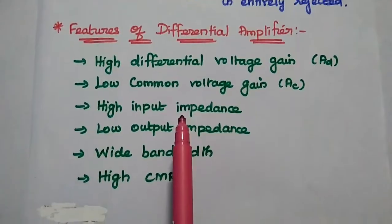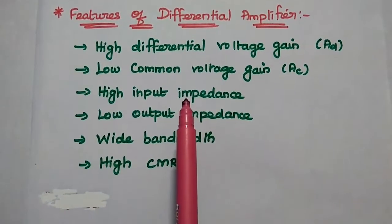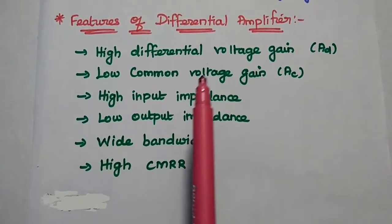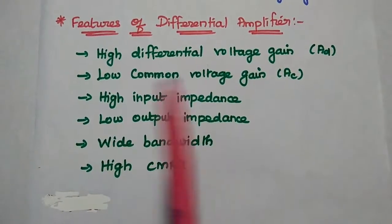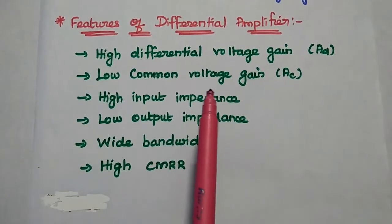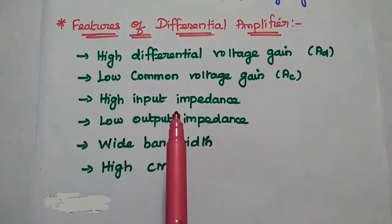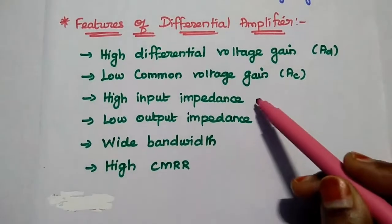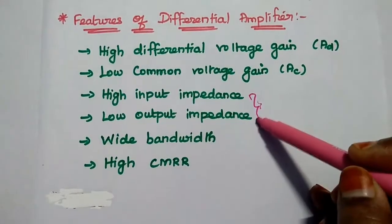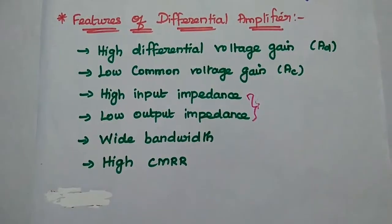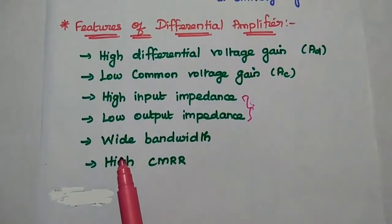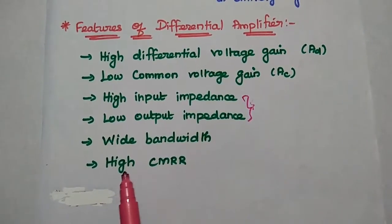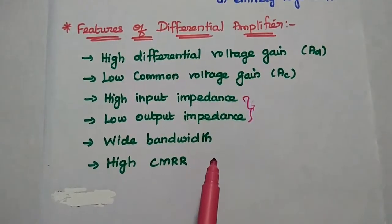The features of a differential amplifier are: very high differential voltage gain, low common mode voltage gain, high input impedance, low output impedance — these two are important parameters for amplification — larger bandwidth, and very high CMRR values.